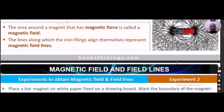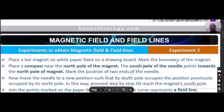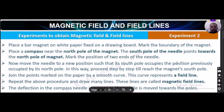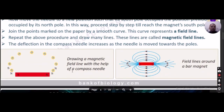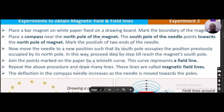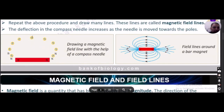Now let us perform Experiment 2 on the same topic. Place a magnet on a white paper fixed on a drawing board and mark the boundary of the magnet. Place a compass near the north pole; the south pole of the needle points towards the north pole of the magnet. The north pole of the compass will point toward the south pole of the bar magnet, and the south pole will face away from it.